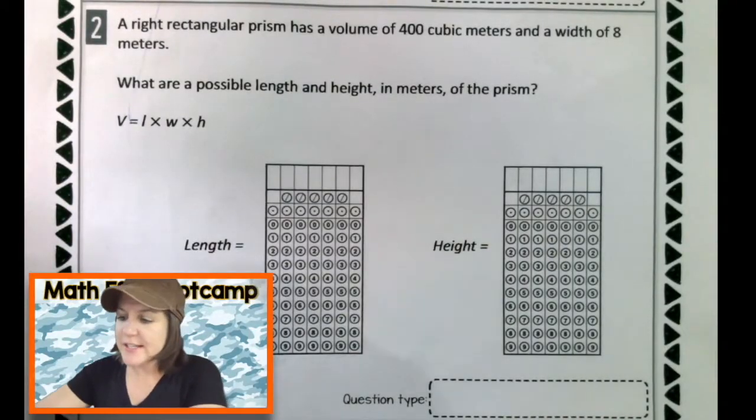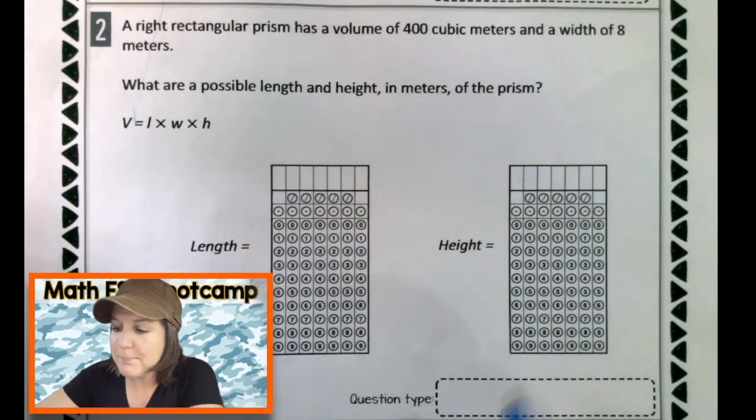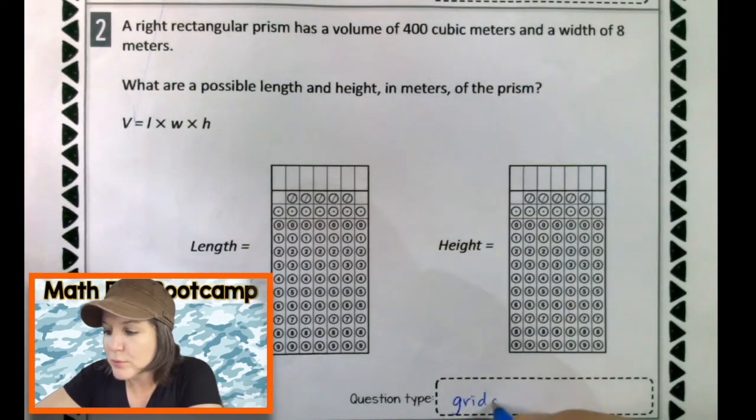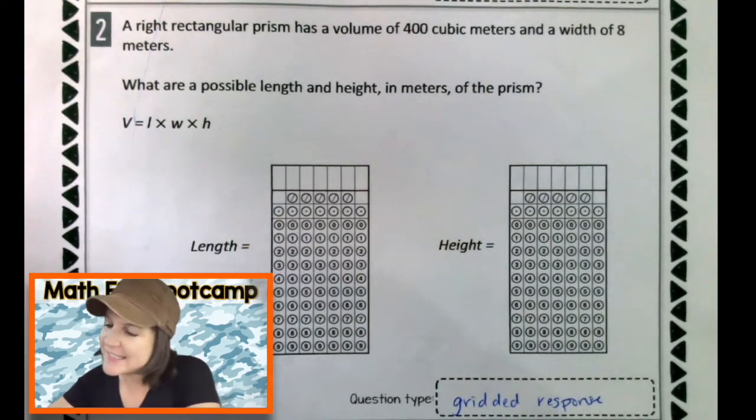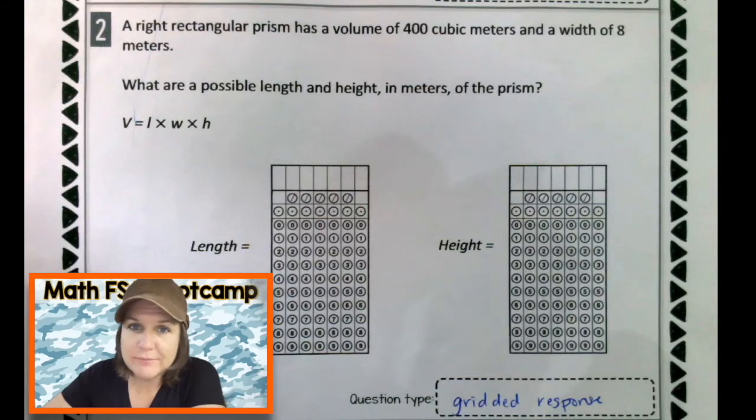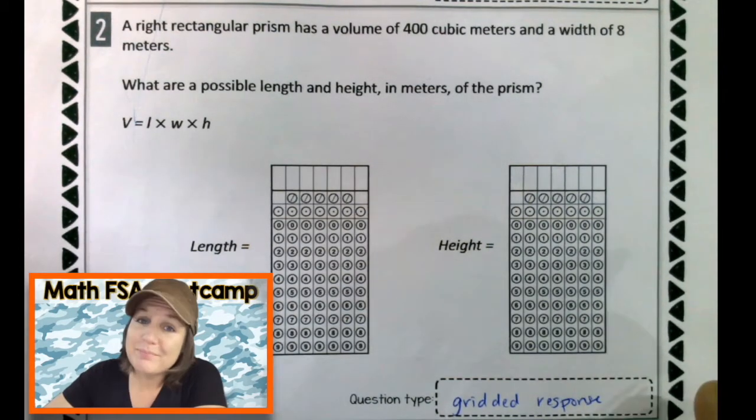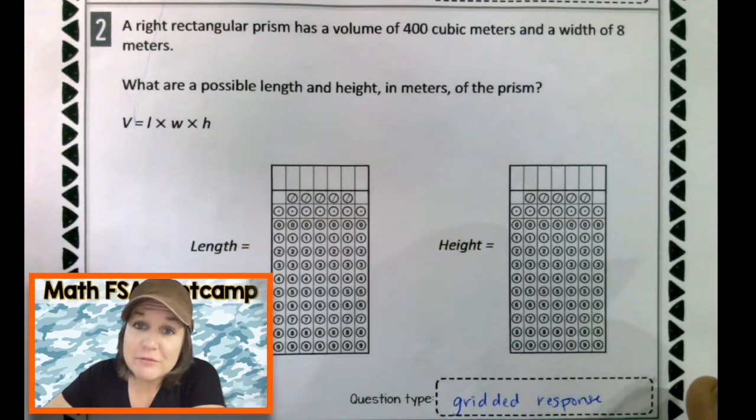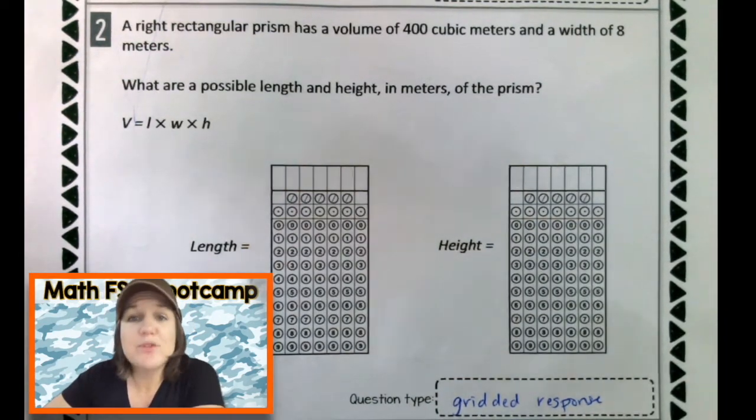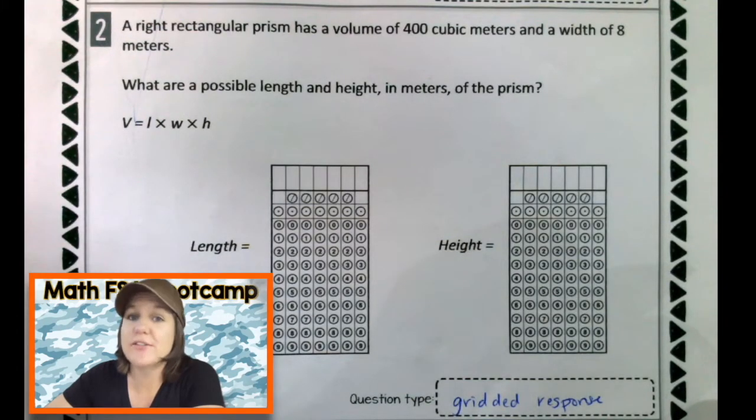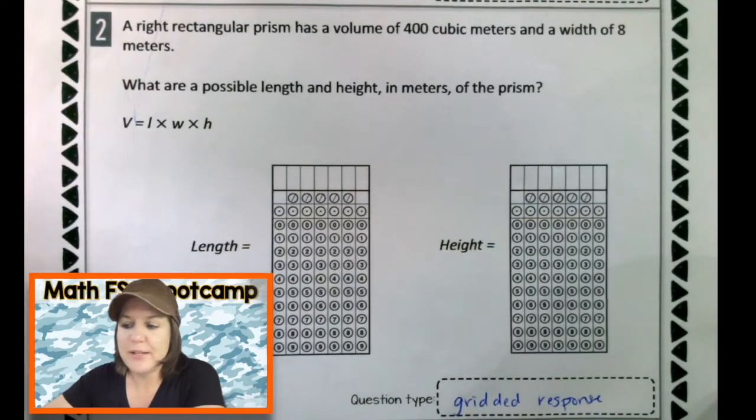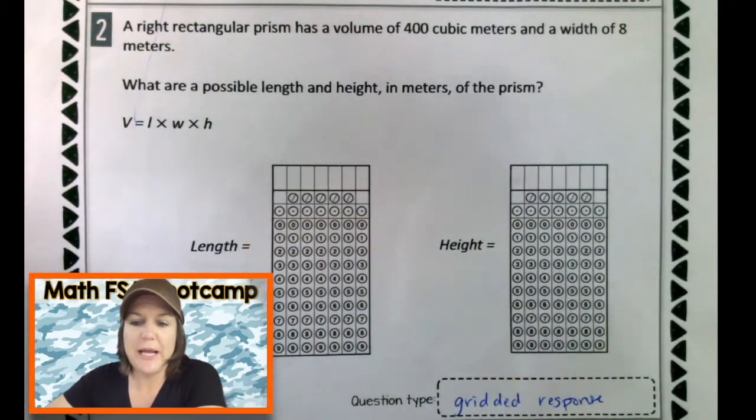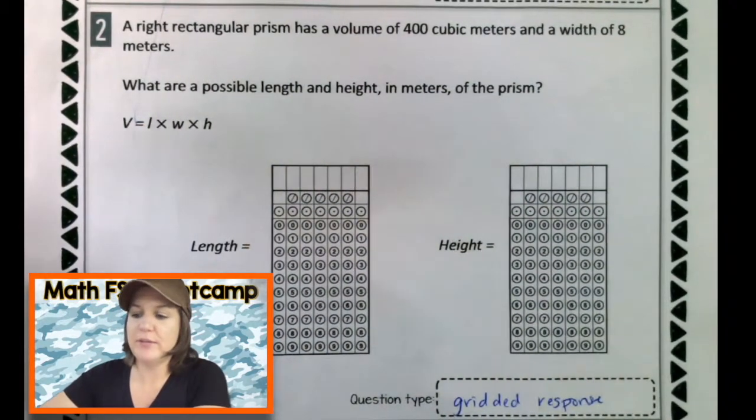First things first, let's identify the question type. I see two grids. That means that it is a gridded response. What kind is it? A grid response. If you hear pounding in the background like little droplets of rain, that's because it's raining right now. But these videos, they need to get created for you all to see them, to watch them, to absorb them in time for the FSA. So rain or shine, I've got your back.